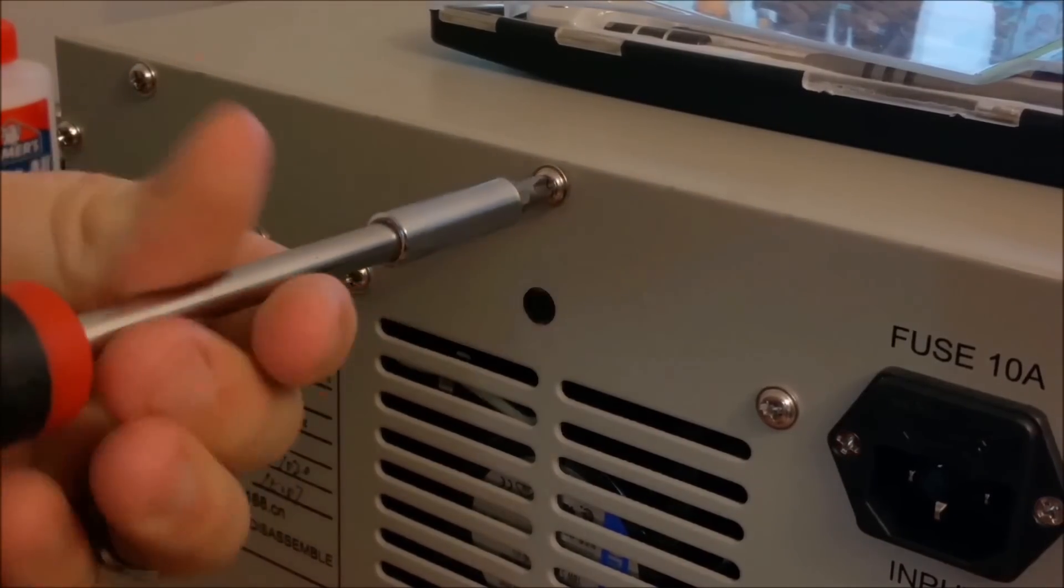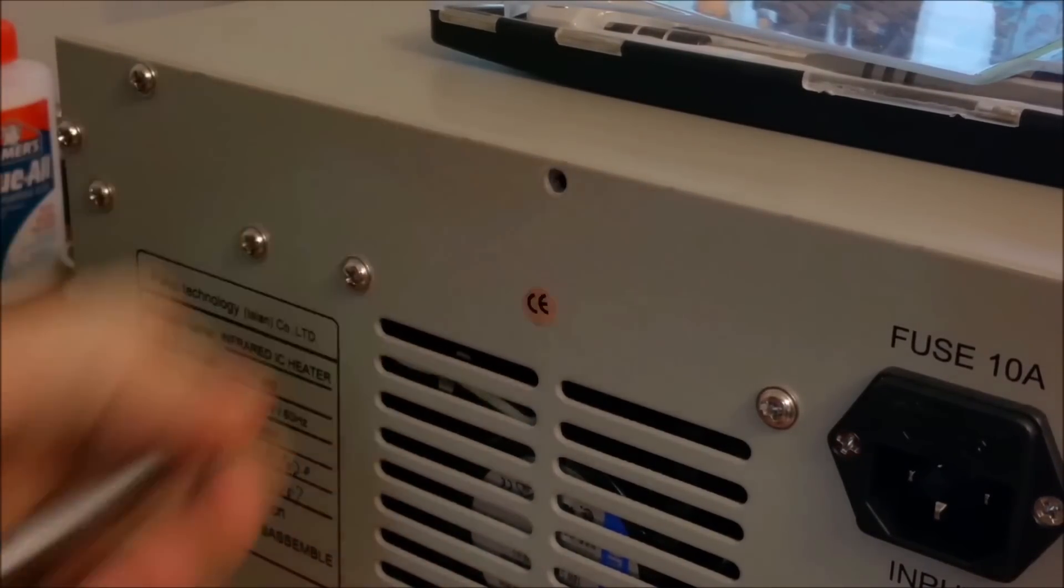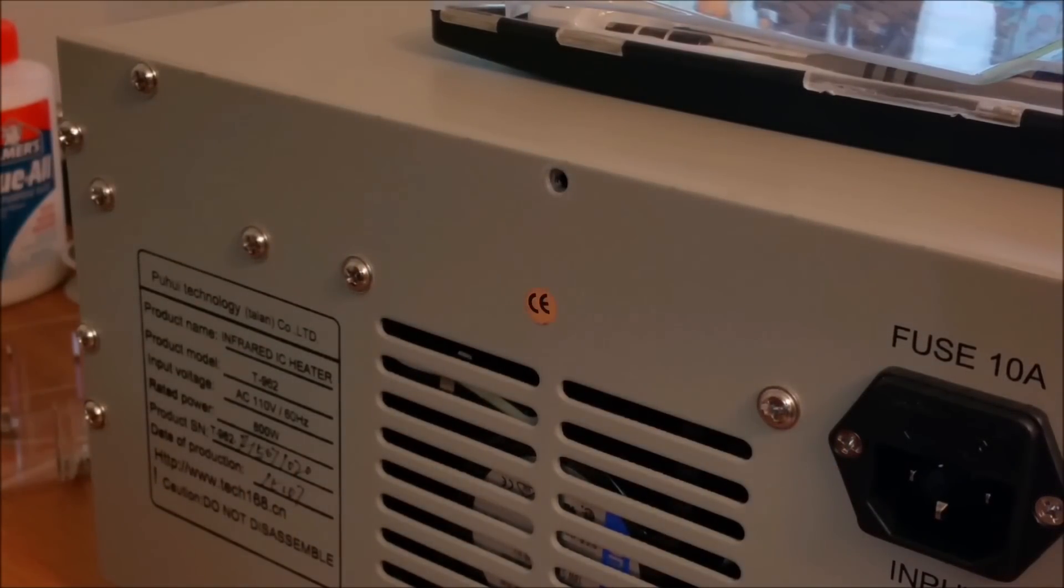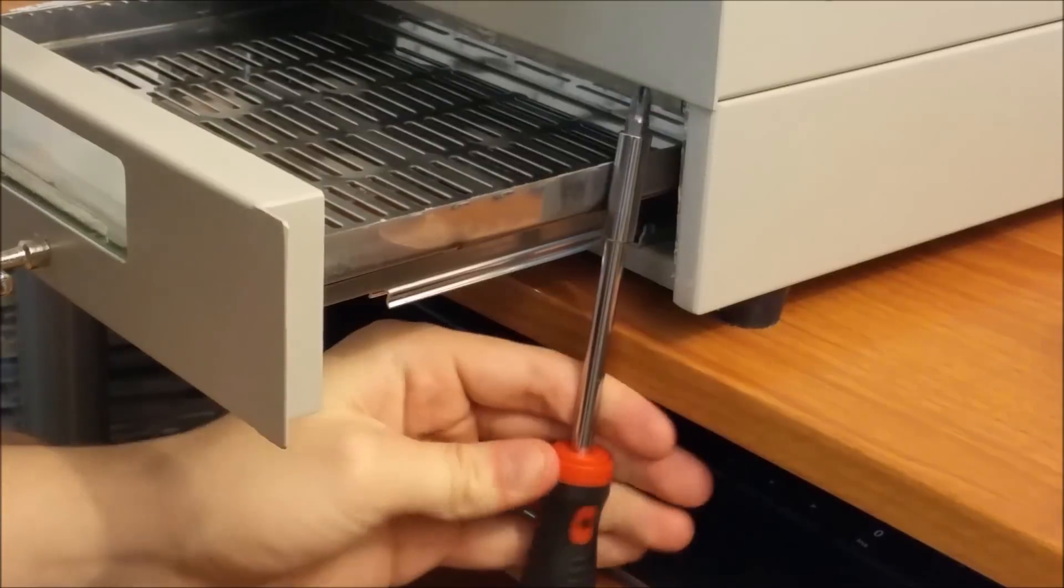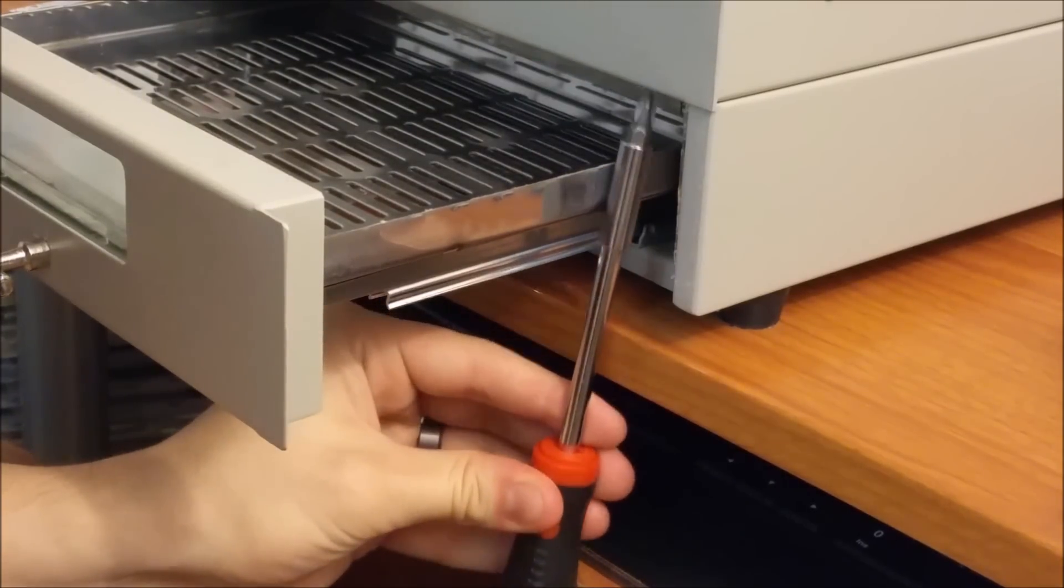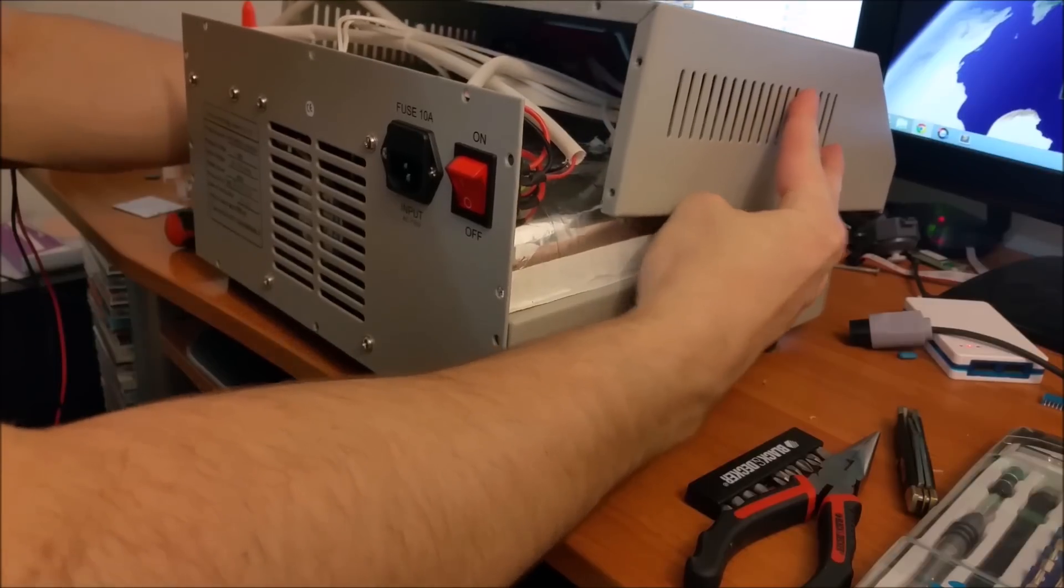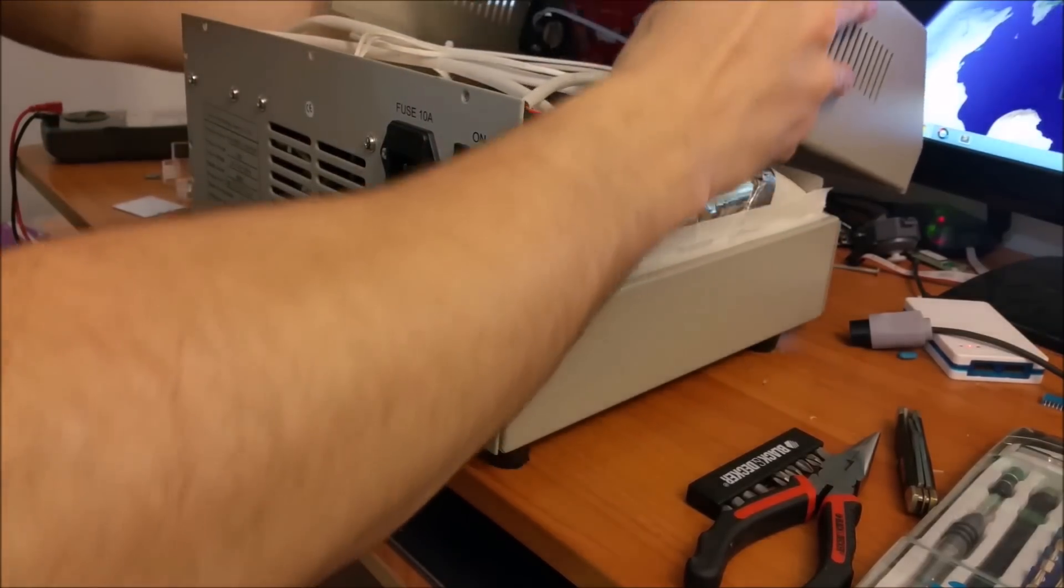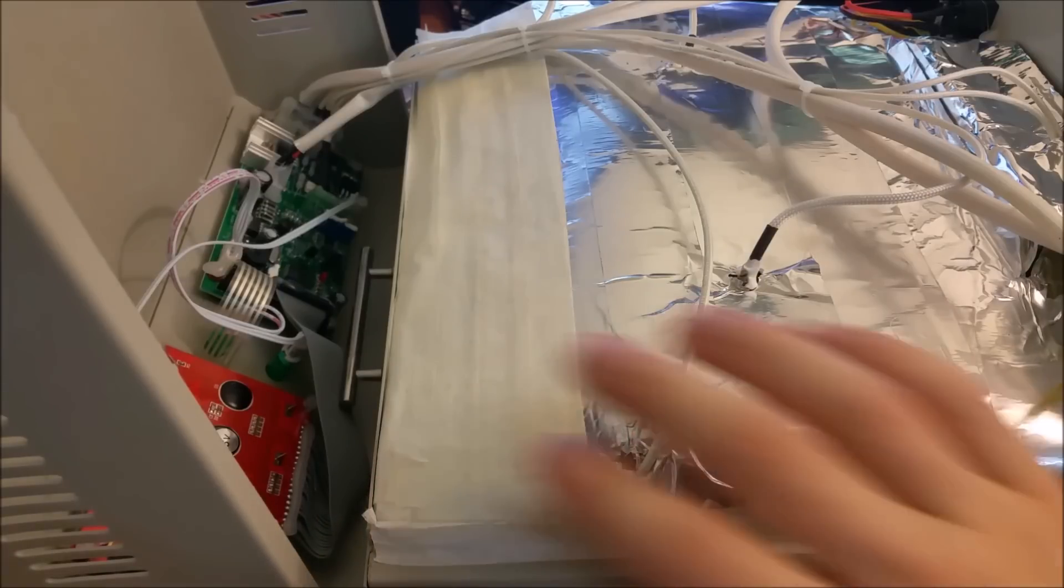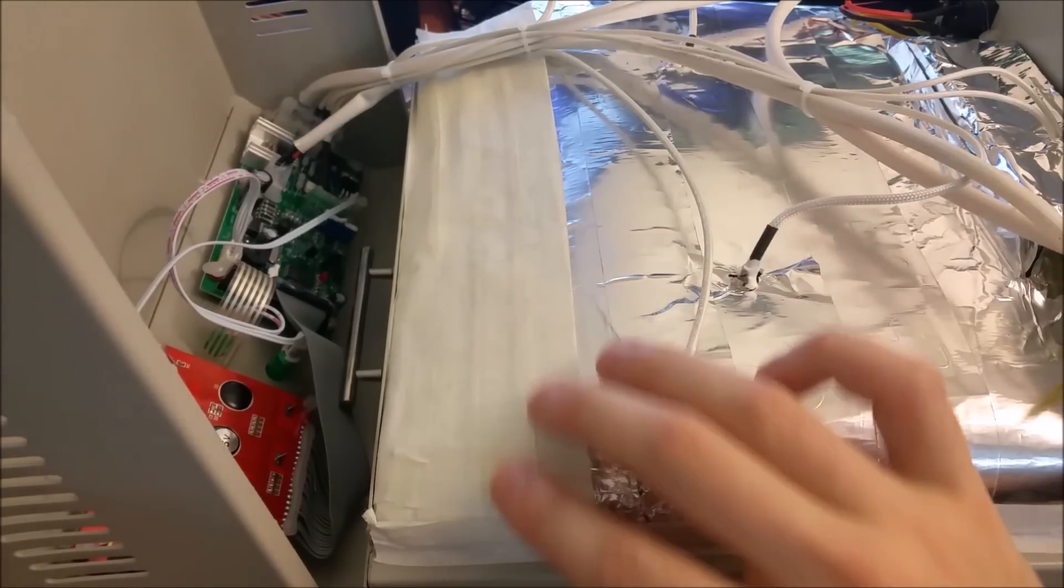To get started, switch off the oven and unplug the power cable. Simply remove all the screws around the edge on the back for the top component, which are these highlighted ones here. You also need to remove the two screws hidden by the drawer at the front. When all the screws have been removed, the top section of the oven should be able to slide forward quite easily. Be careful handling the top component as it is still connected with wire harnesses and you could damage the connections.